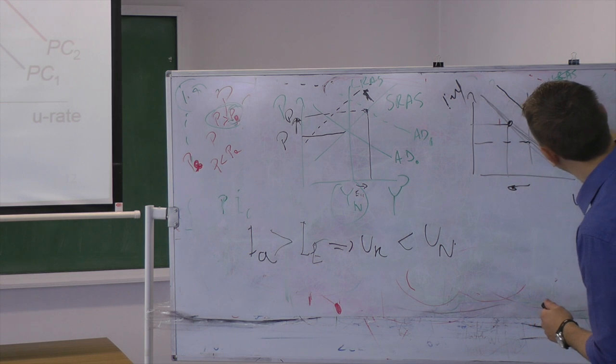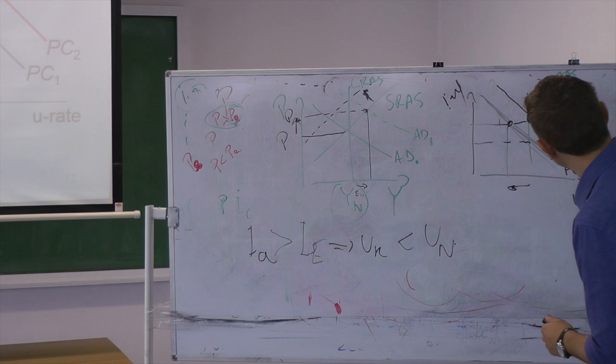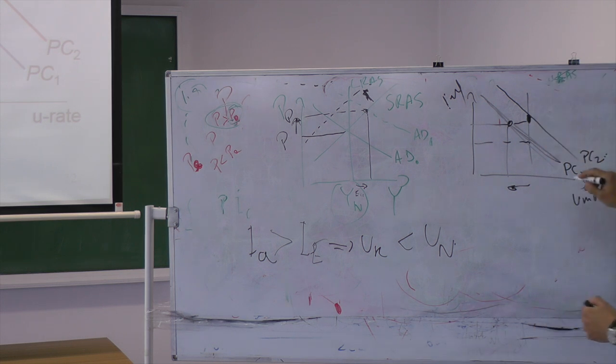What will happen now? I'm going to have another Phillips curve here. So this is Phillips curve one. This is Phillips curve two. What is the difference? Here I had lower expected inflation. It's low expected inflation. Here I have high expected inflation because the economy adjusted to the new level.